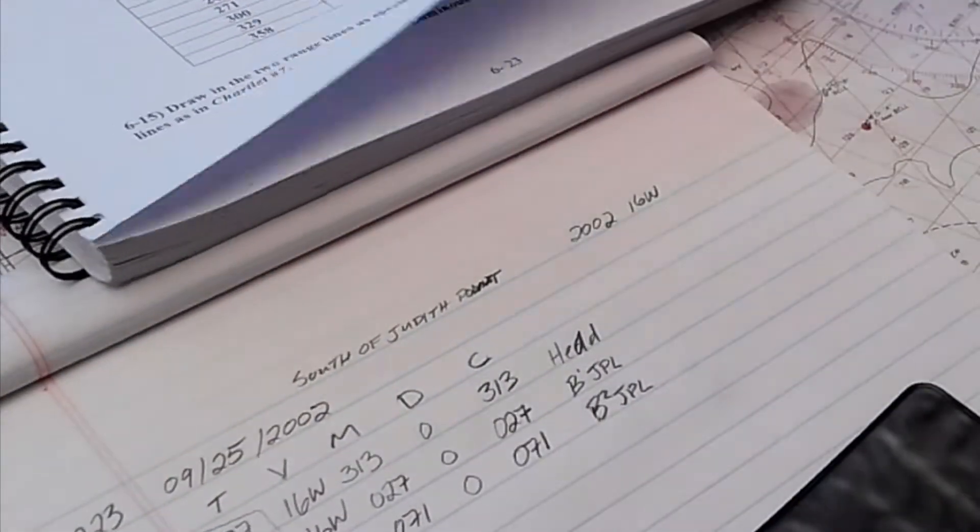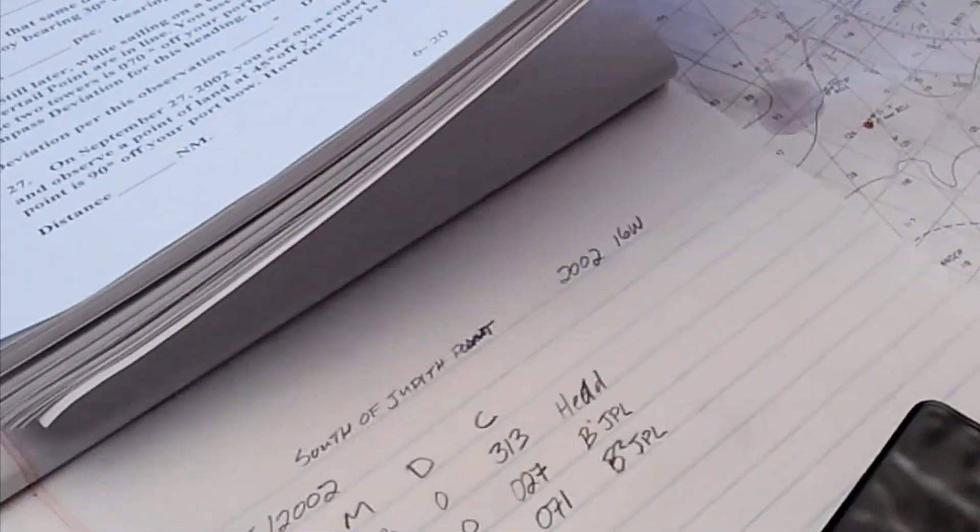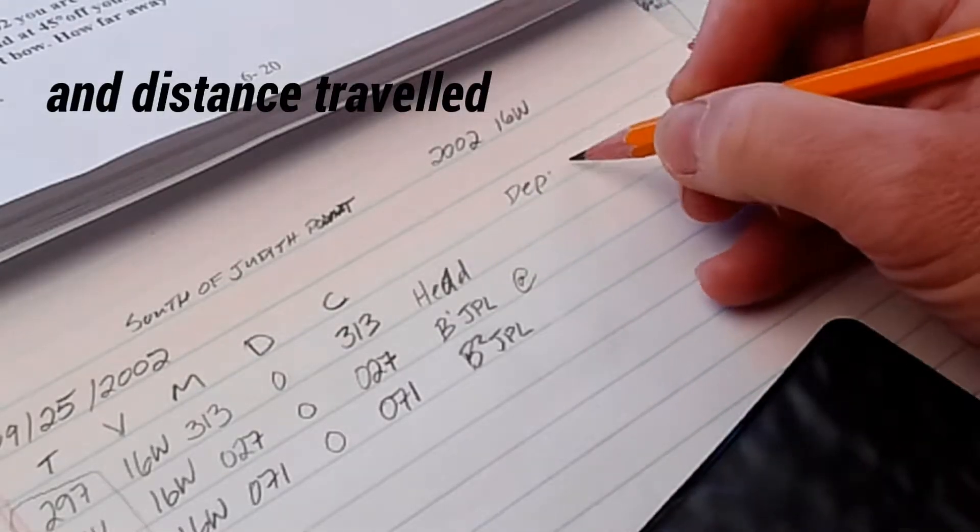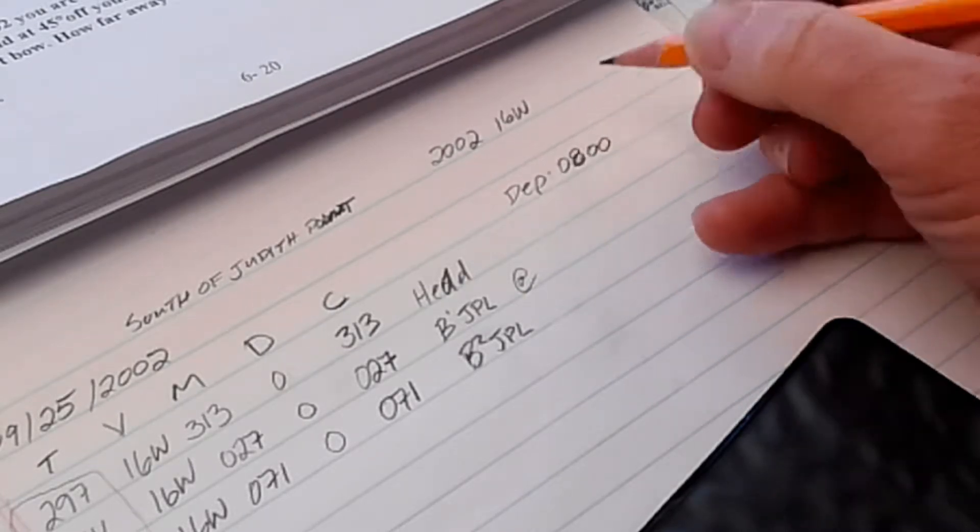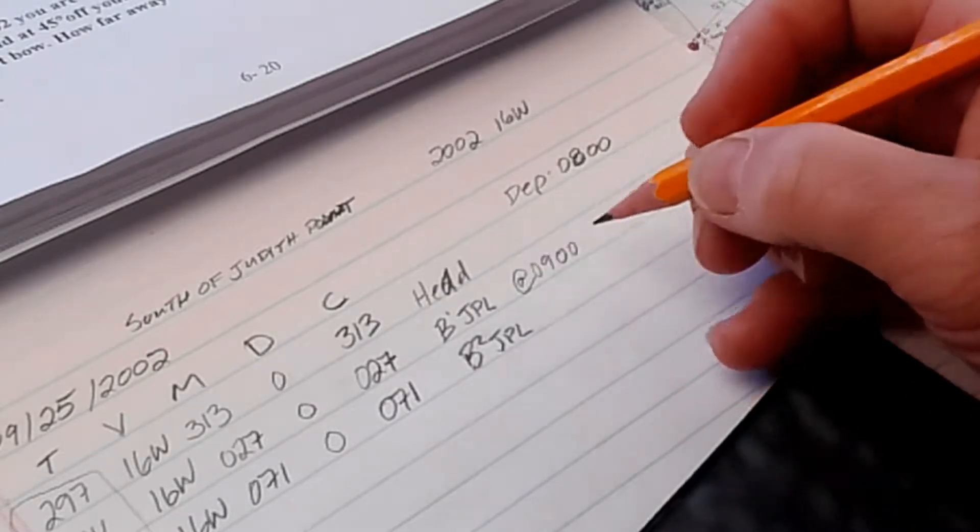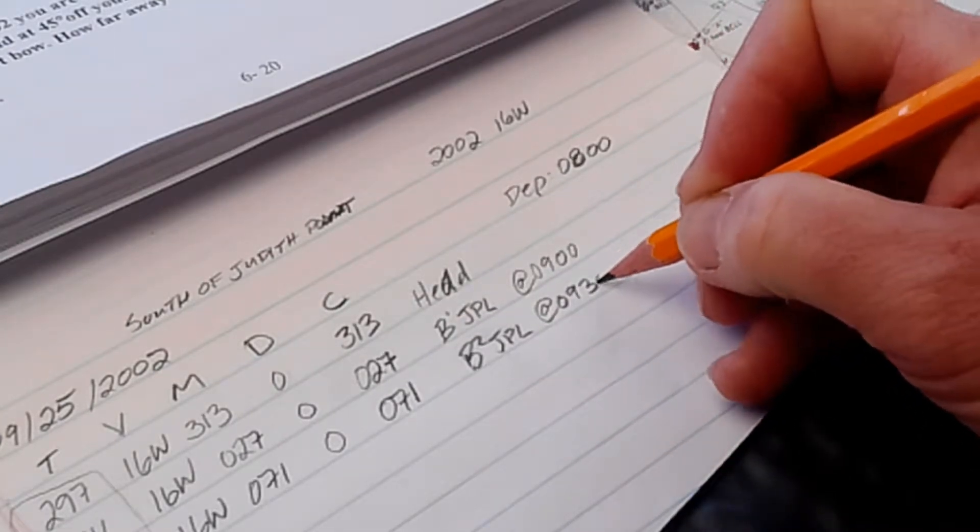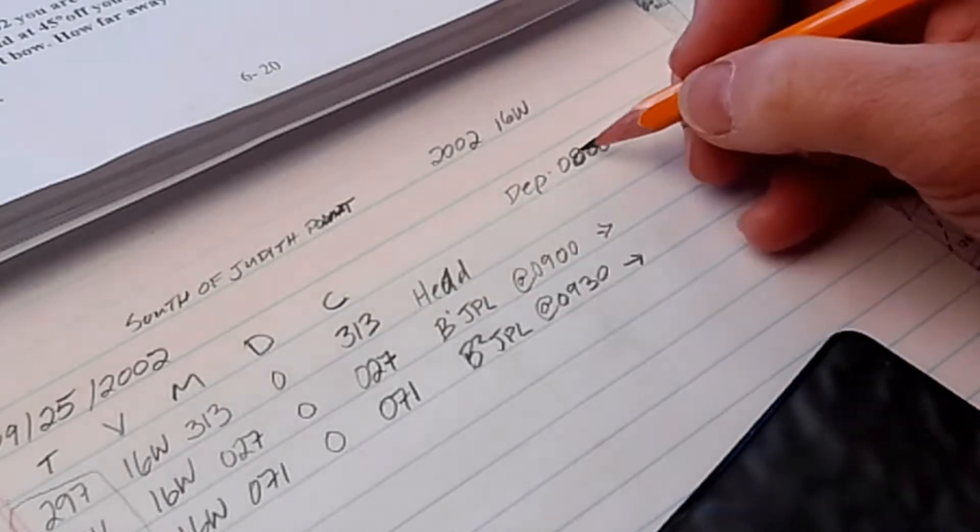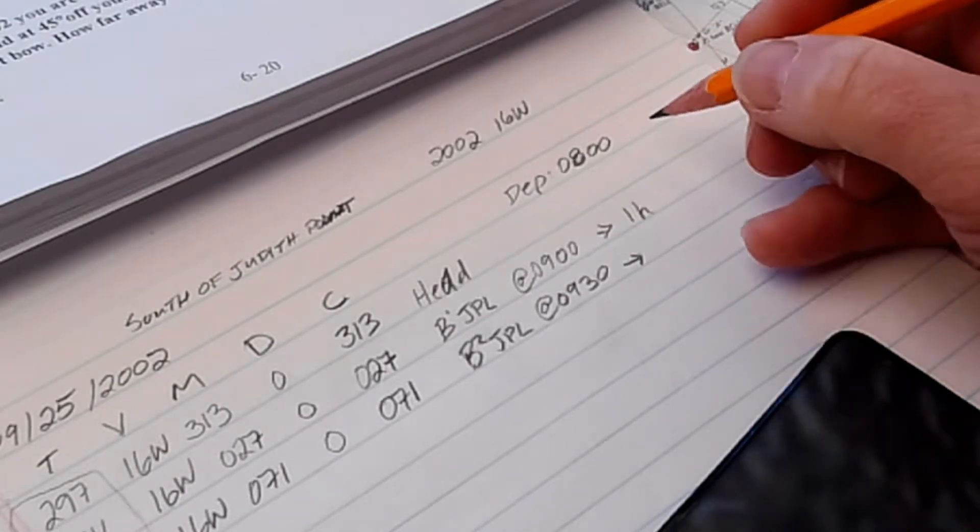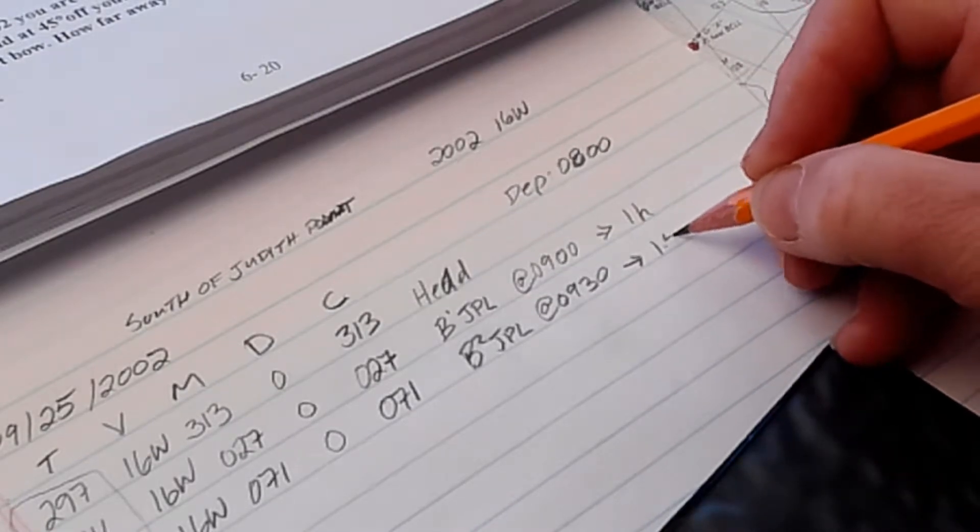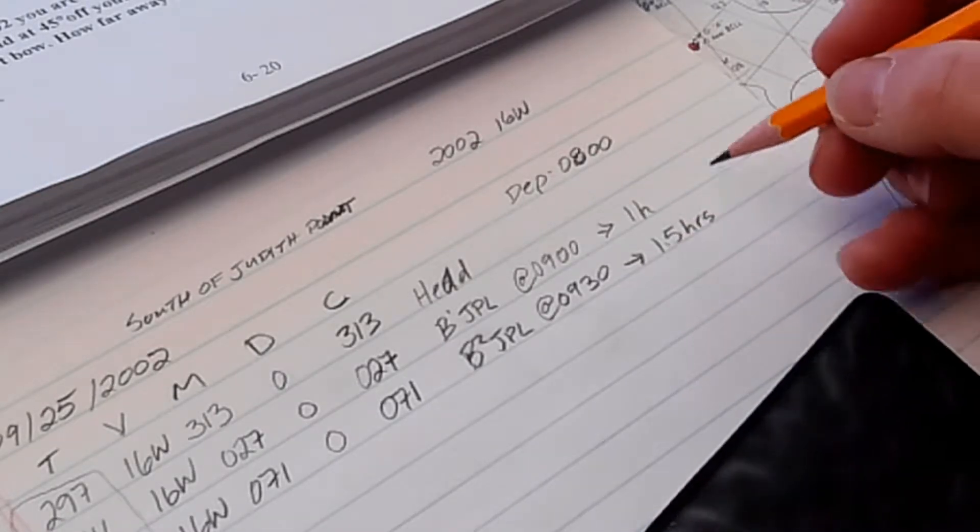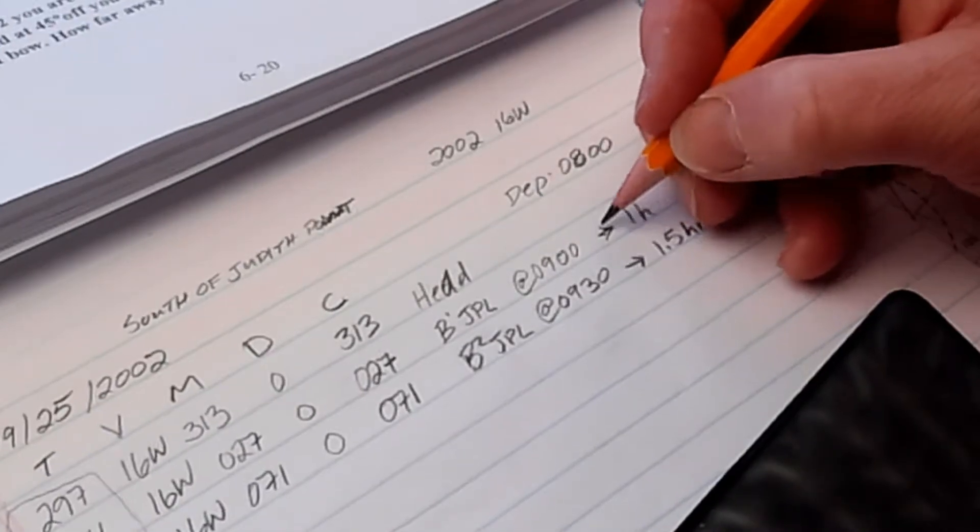Before we get to that, we need to do some math looking at the speeds. We departed at 0800, the first bearing was taken at 0900, and the second at 0930. So we traveled for one hour, then 1.5 hours total. Use decimal hours, not hours and minutes, because it's much easier to calculate.